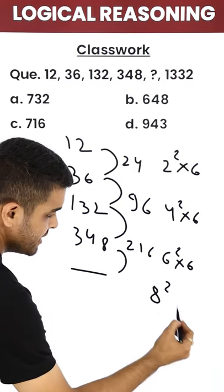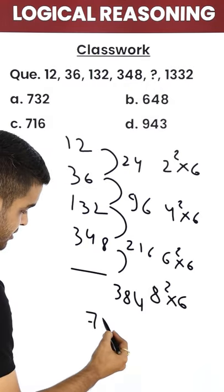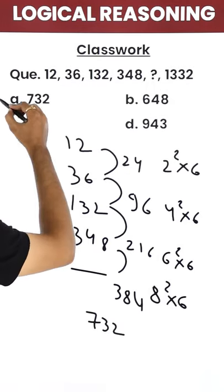So next should be 8 squared into 6. That is how much? 384. And when you add, your answer should be 732. That is option A.